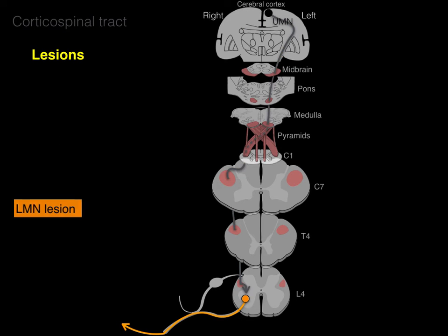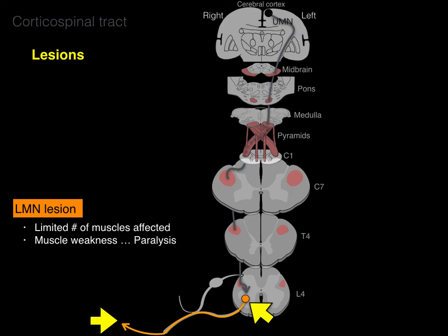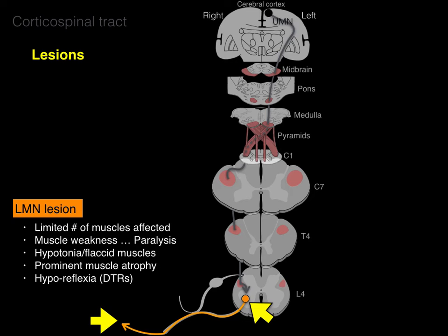Lower motor neuron lesions occur anywhere from the ventral horn to the ventral root, ventral ramus, out to the skeletal muscle and synapse. A limited number of muscles are affected compared to upper motor neuron lesions, because you're working at a segmental level — think myotomes. This results in muscle weakness and even paralysis, hypotonia with flaccid muscles, prominent muscle atrophy, and hyporeflexia of deep tendon reflexes. Acutely there are fasciculations — quivering of muscles under the skin.